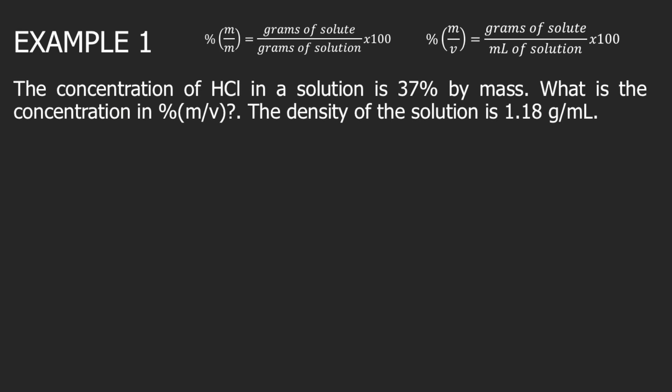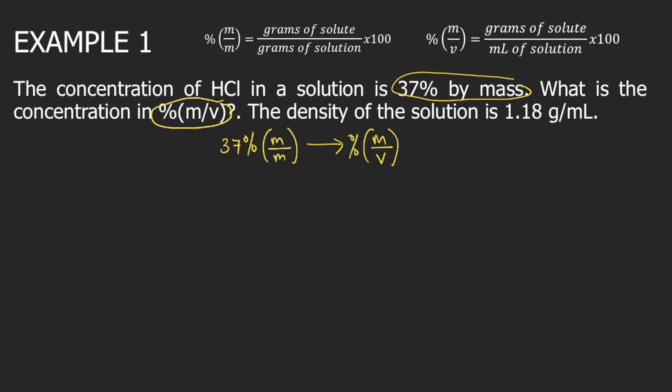Let's try to answer example one. The concentration of hydrochloric acid in a solution is 37 percent by mass. What is the concentration in percent mass per volume? The density of the solution is 1.18 grams per mL. In this problem, we are given 37 percent by mass, and we will convert this to percent mass over volume. Remember: percent by mass means grams of solute per 100 grams of solution, so 37 percent by mass means 37 grams of solute per 100 grams of solution.